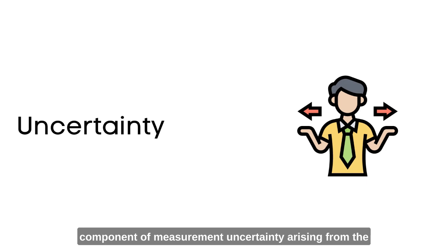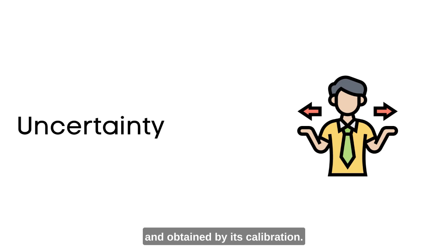Uncertainty: Uncertainty is defined as doubt. A component of measurement uncertainty arises from the measuring instrument or measuring system in use, and is obtained by its calibration.